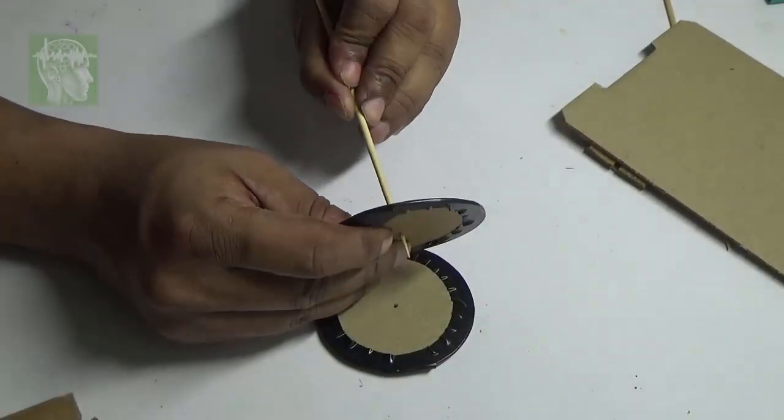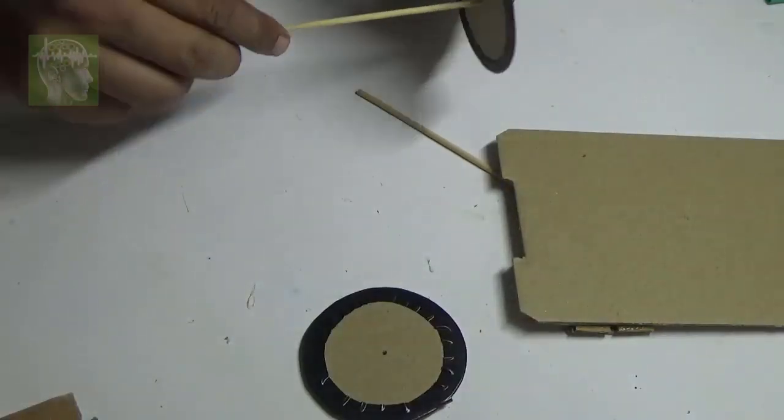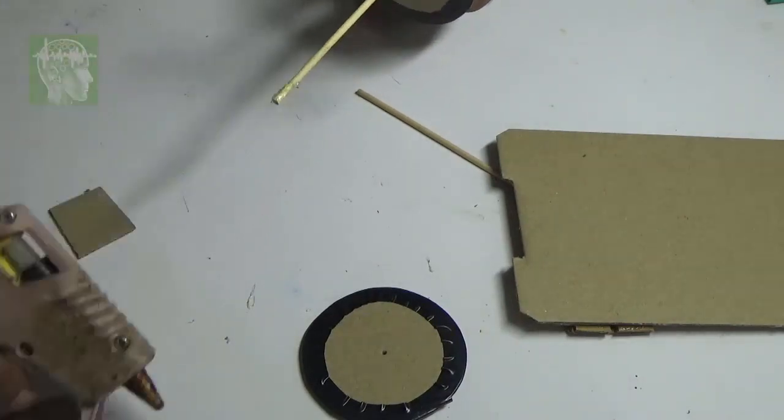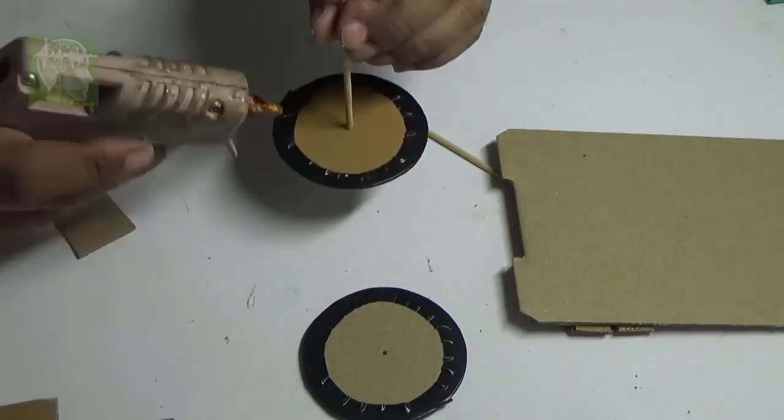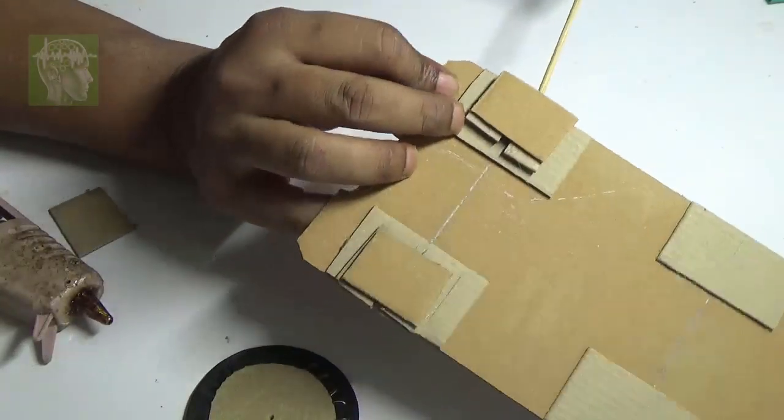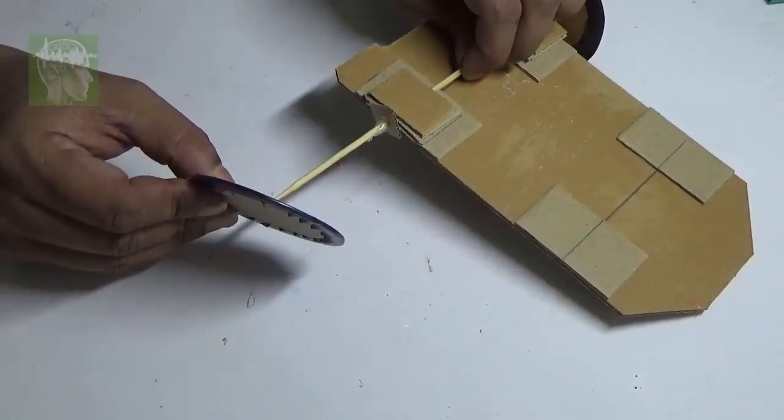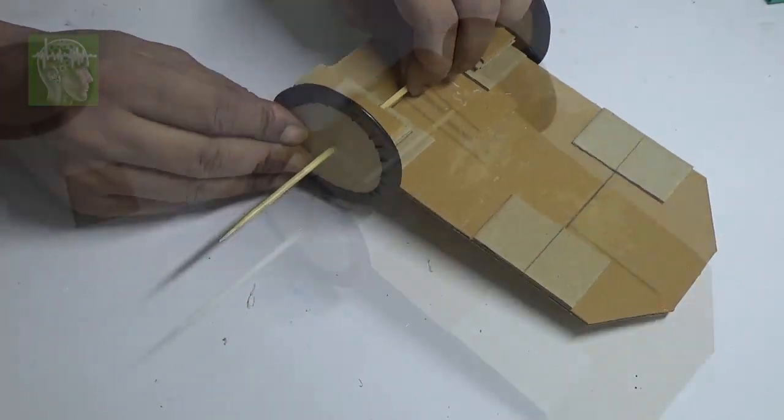Take two wheels and fix them with the shaft using hot glue. First stick one wheel and pass the shaft through the channel, and then on the other side fix the second wheel.